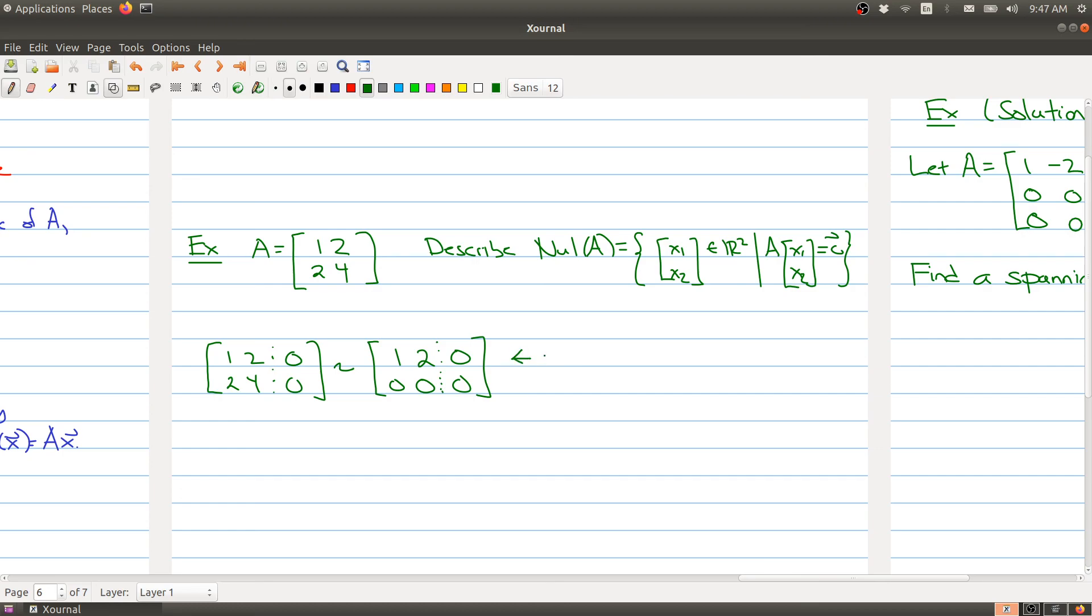What I see here is that x2 is free, and then I also get that x1 is equal to negative 2x2. So I'll set x2 to be t, so we can describe all the solutions (x1, x2) as looking like (-2t, t). I can factor that t out, so I have t(-2, 1) as t goes through R.